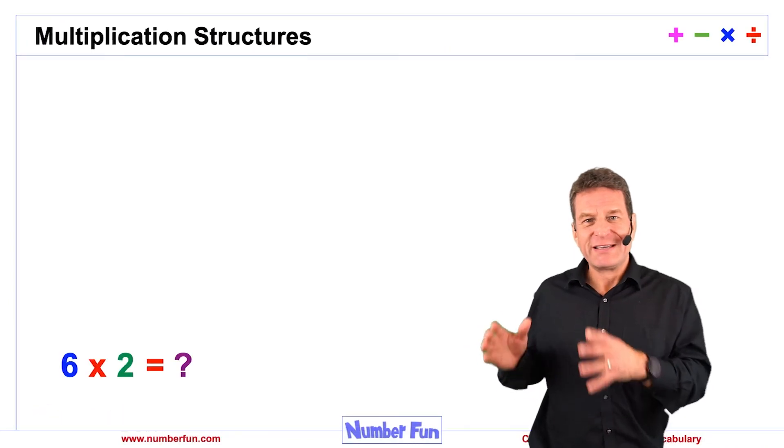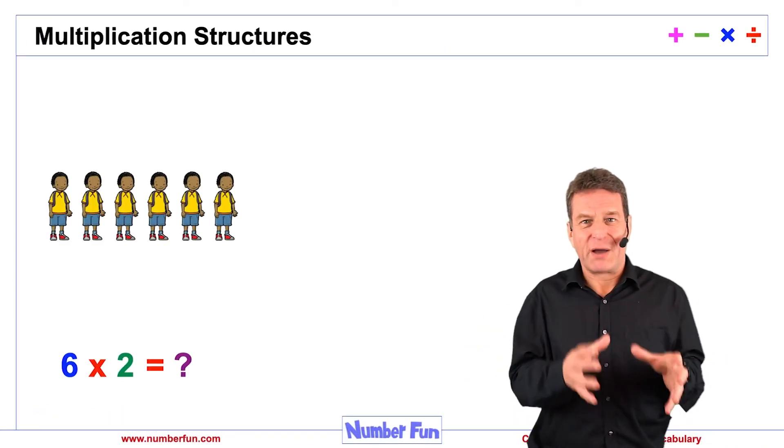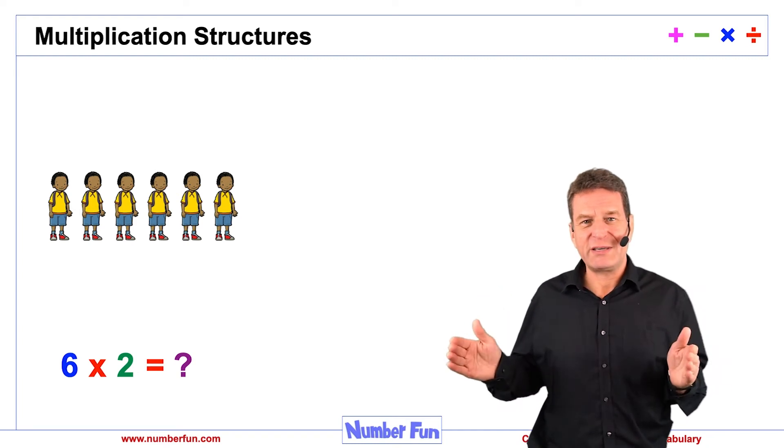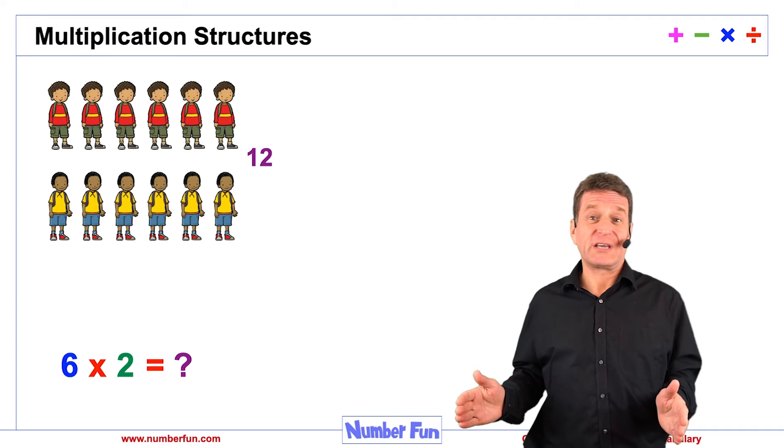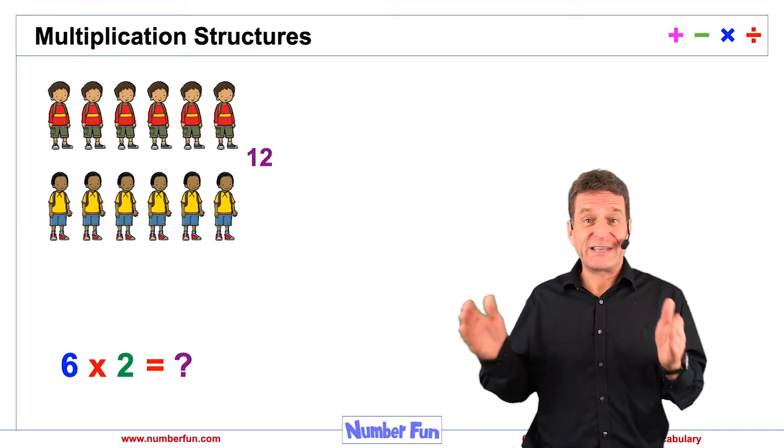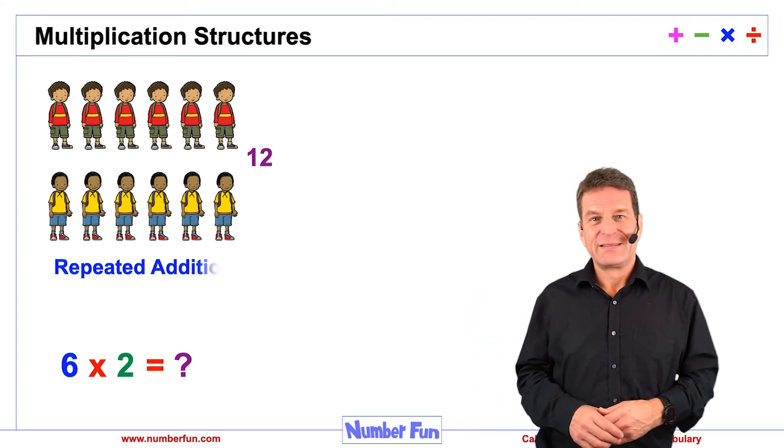In this imagery here we have 6 multiplied by 2. So a group of 6 boys and I multiply that by 2, I end up with 2 lots of 6 boys. So 6 is doubled. That's repeated addition.